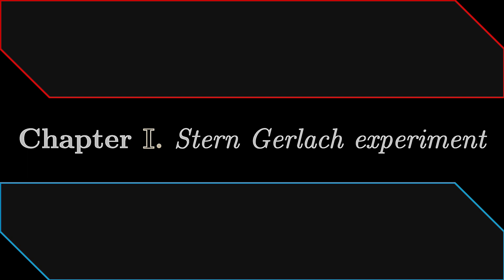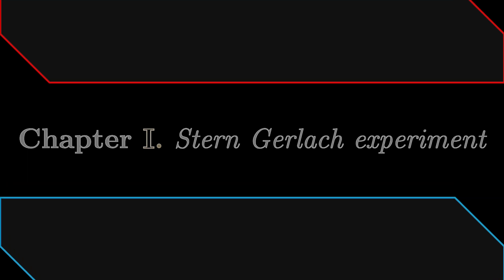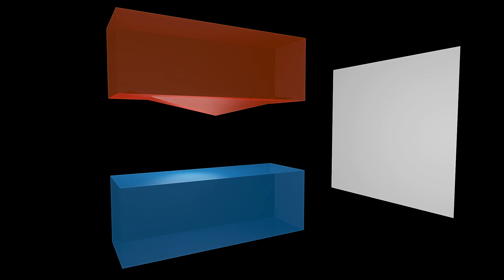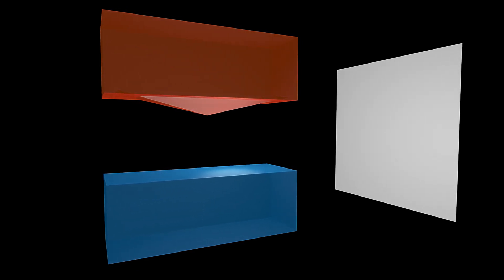Let's start this lecture by doing an experiment together. Imagine we have a setup: on the bottom we have a blue magnet, and on the top we have a red magnet which is a little pointy, so it's stronger and more localized. This setup is known as the Stern-Gerlach experiment. However, instead of talking about the results, let us do the experiment together.